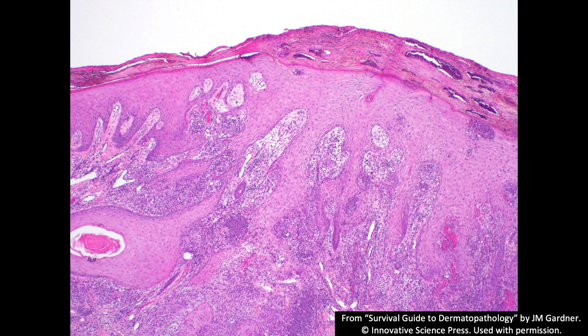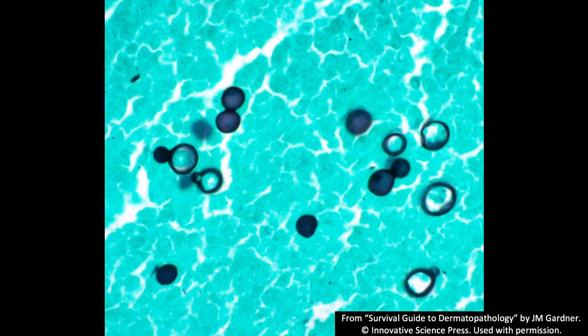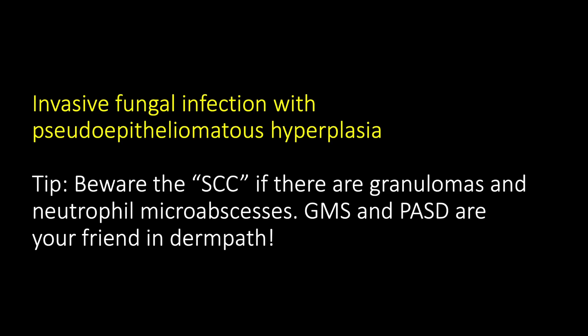Here's a case where you could think it looks kind of like squamous cell carcinoma — it's glassy and pushes down into the dermis. But look at all of these clusters of neutrophils. And if you look closely, you can find yeast organisms. In this case, this is blastomycosis, but other types of invasive fungal infections can produce a similar picture. Beware the invasive fungal infection that has pseudoepitheliomatous hyperplasia mimicking squamous cell carcinoma. If it looks like squame but you see granulomas and neutrophil microabscesses, go look around and consider doing infectious stains — GMS and PAS are your friend in dermpath. For invasive fungi, GMS seems to do better, though it depends on what stain works best in your lab, and if you have high suspicion, you can do both.